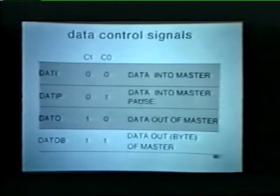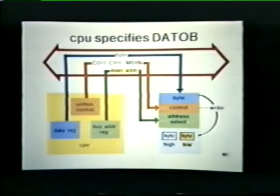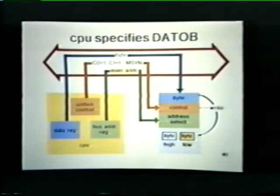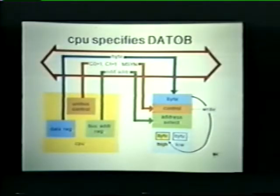Our fourth and final type of memory operation involves data OB transfers. A master device specifies a data OB transfer if it wishes to store a byte rather than a full word of data. The memory operations for a data OB are the same as those for a data O; however, a single byte is stored instead of a 16-bit word. The address supplied by the master device designates whether a high byte or low byte is to be stored. If the CPU places an even address on the unibus, a low byte is written; if the CPU places an odd address on the unibus, a high byte is stored.